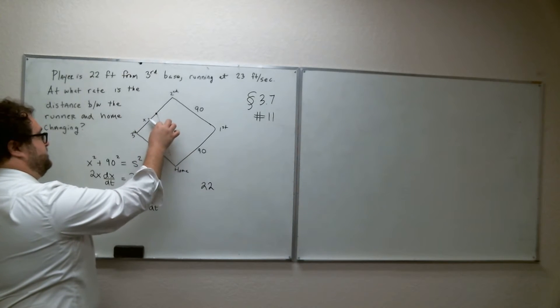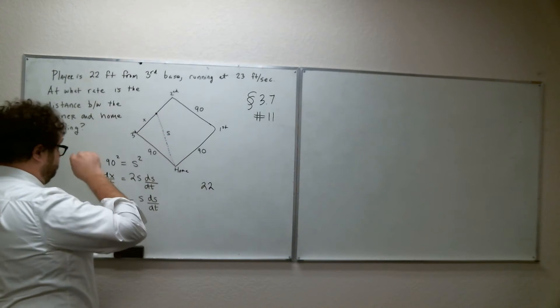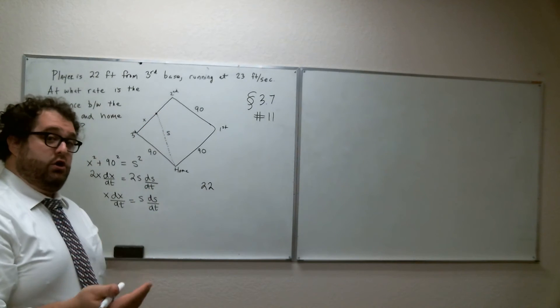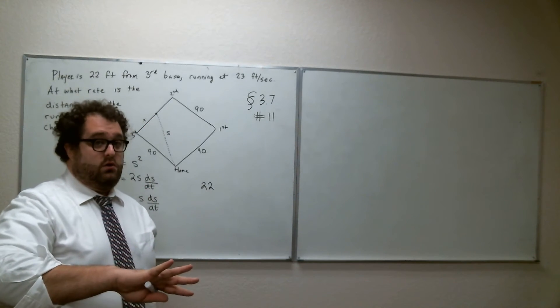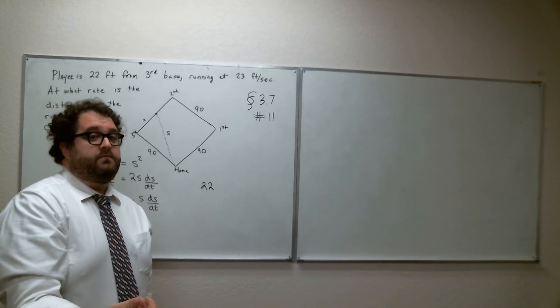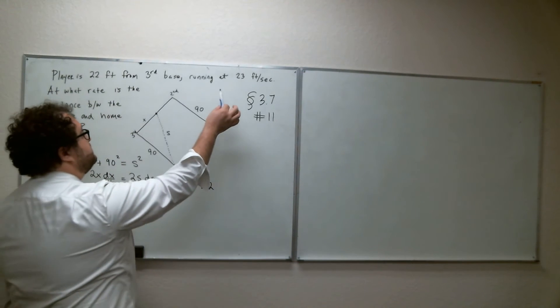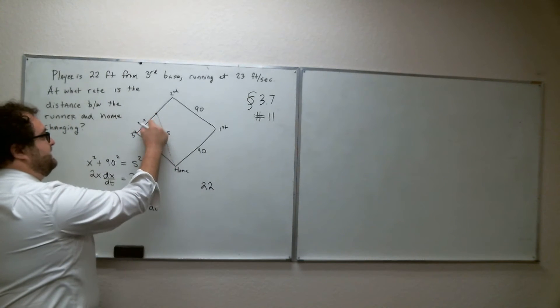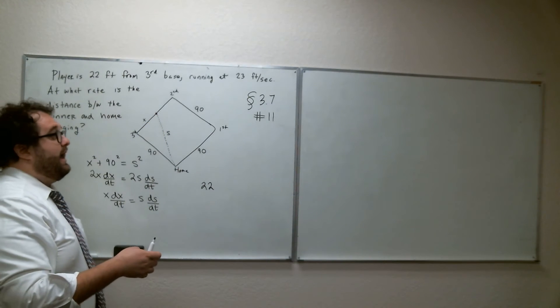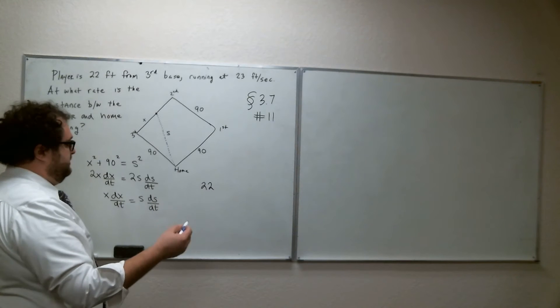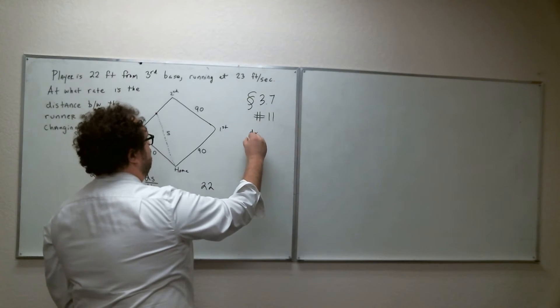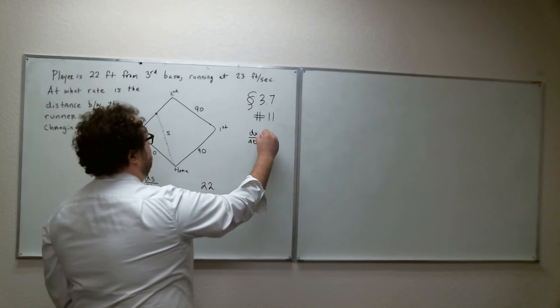What does that tell us about the change in X? Is X this distance right here? Is that getting bigger, or is that getting smaller, or is it staying the same? Well, I think if the runner is going 23 feet per second towards third base, we can see that X is shrinking at a rate of 23 feet per second. So DX/DT is 23.